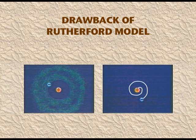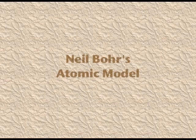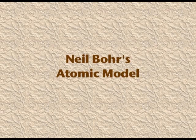Neil Bohr tried to remove the drawbacks of the Rutherford model. Two major theories helped Bohr: first, that electromagnetic radiations have dual behavior — a wave nature and a particle nature; and second, that atomic spectra can only be explained by quantized energy levels. These formulations helped Bohr establish his own atomic model. But before that, let me tell you about atomic numbers and mass numbers.